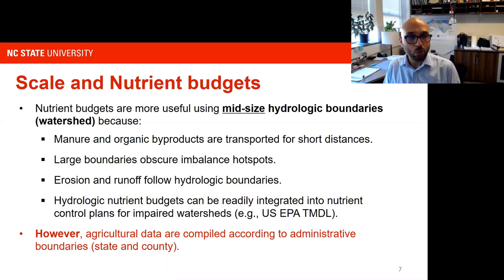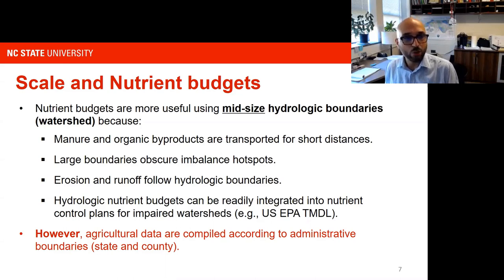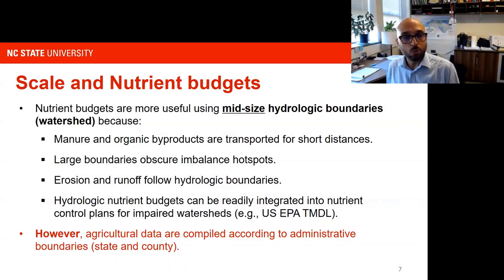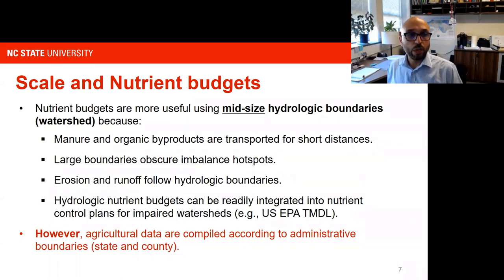Especially when we talk about manure management or organic waste, by definition a lot of these products are not very valuable beyond their embedded nutrients, and they typically contain high water content. As a result, they're not very economical to transport longer distances. If we assume a larger boundary or spatial scale to develop these nutrient budgets, we will be overlooking a lot of the hotspots that are a result of these shorter transportation distances.